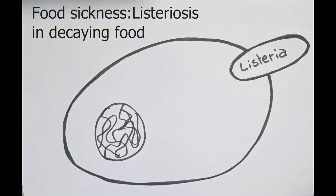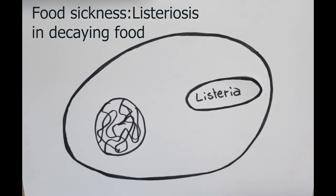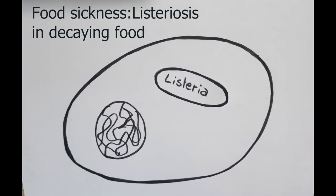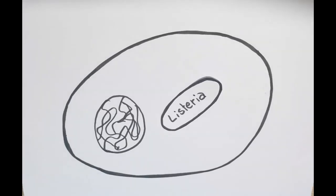Listeria is a common bacteria that parasites cells. It causes food sickness, such as listeriosis, in decaying food. It is efficient, as it easily goes through the cell membrane.